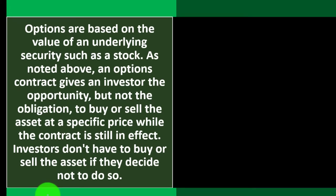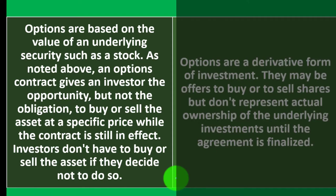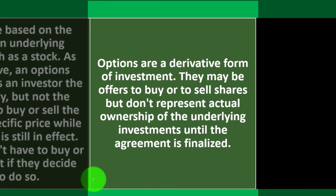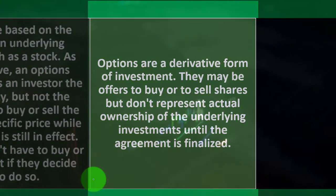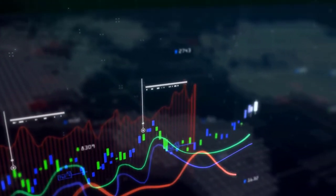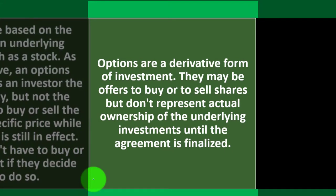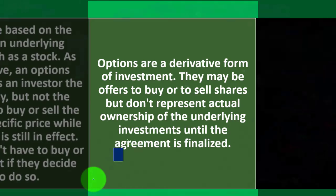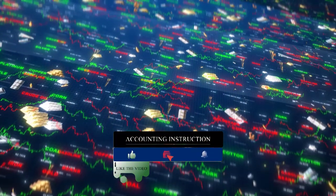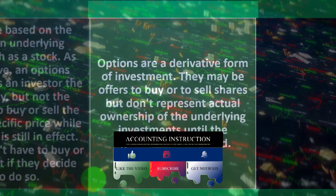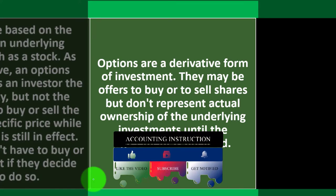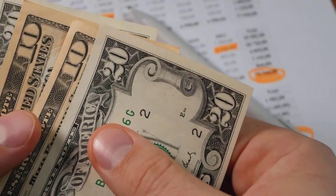Options are based on the value of an underlying security such as a stock. An options contract gives an investor the opportunity — but not the obligation — to buy or sell the asset at a specific price while the contract is in effect. You may hear the term 'derivative' when investing; options are a derivative of the investment. They may represent offers to buy or sell shares, but don't represent actual ownership of the underlying investment.